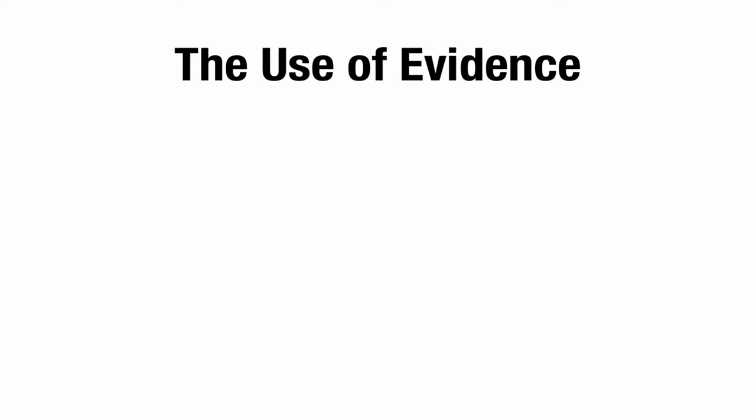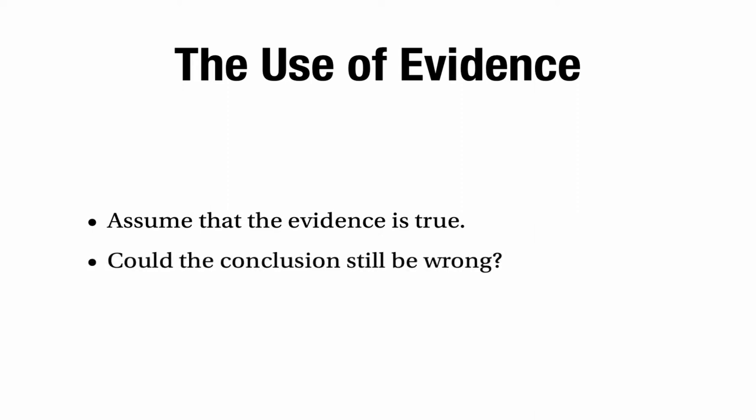When you find evidence in an argument, one thing you should be interested in is whether the evidence is actually right — whether it's true. But in critical thinking we're not particularly interested in this question. It's an important question but it's not a critical thinking question. In critical thinking we're going to assume that the evidence is true, and the question we want to answer is: could the conclusion still be wrong? We're interested in the link between the evidence and the conclusion and we're trying to decide whether the conclusion actually follows from the evidence.